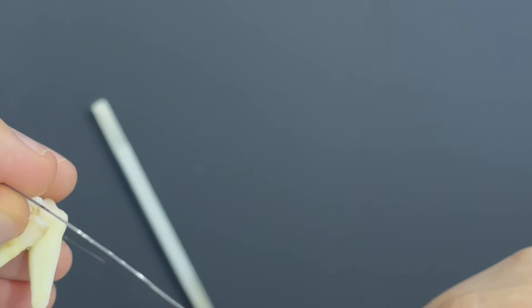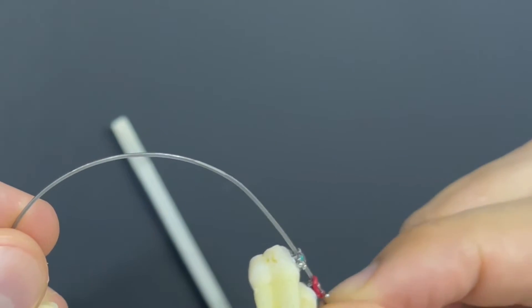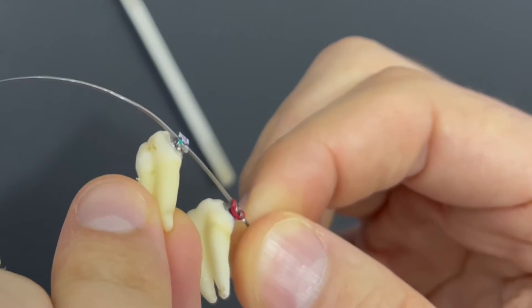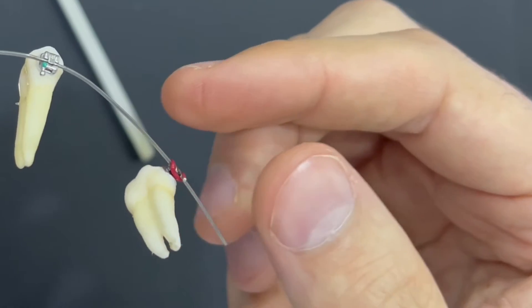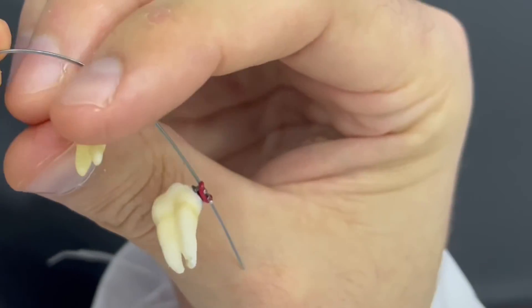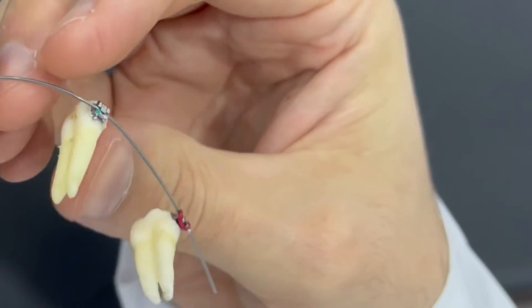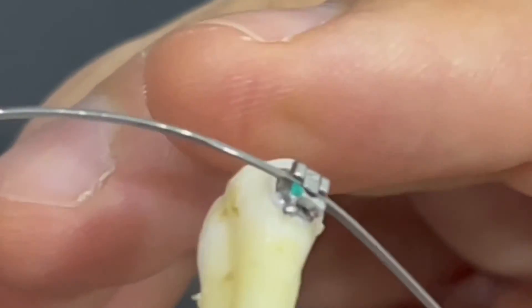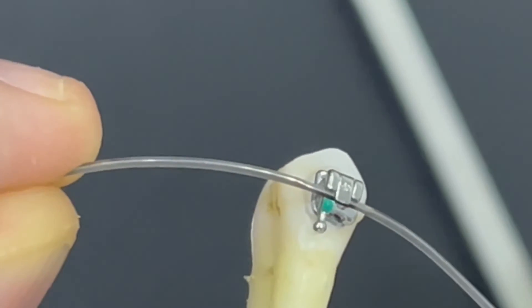We see here the different shaping of the wire at this location. When we pass the tooth over that place, we see the inclination has already changed. We make the root more lingual or palatal and the crown more labial, so we have increased the torque on that tooth.